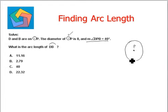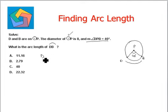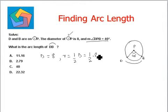D and B are points on the circle, and the measure of angle DPB is 40 degrees. We have to find the length of arc DB. The diameter is given as 8, so the radius is half of the diameter, which equals half times 8, giving us a radius of 4.